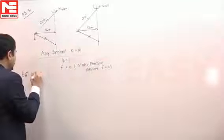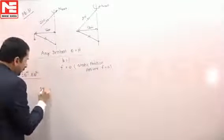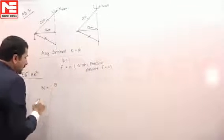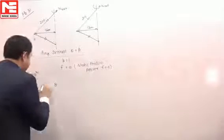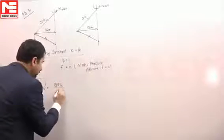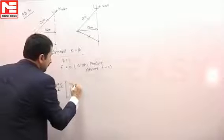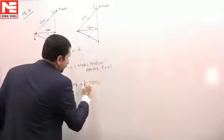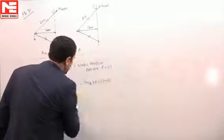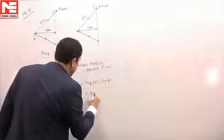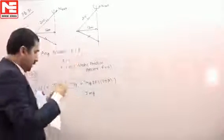So equilibrium equation of Porter governor, we know very well, n squared is equal to 895 by h, times 2mg plus capital Mg plus minus f, times 1 plus k, divided by 2mg.